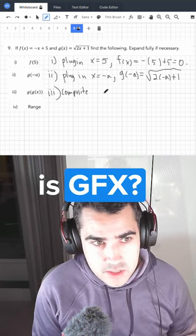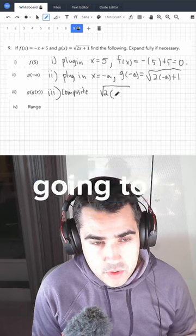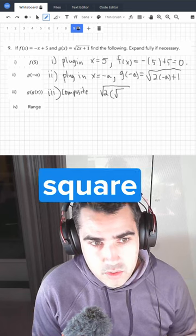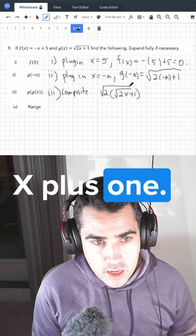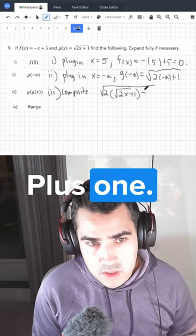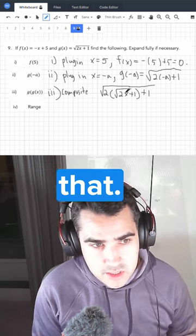So what is g of x? It is the square root of 2. And then here we're going to put in g of x itself, square root of 2x plus 1. And now we do plus 1. So you see this is the outer function and here is the inner function. Just like that.